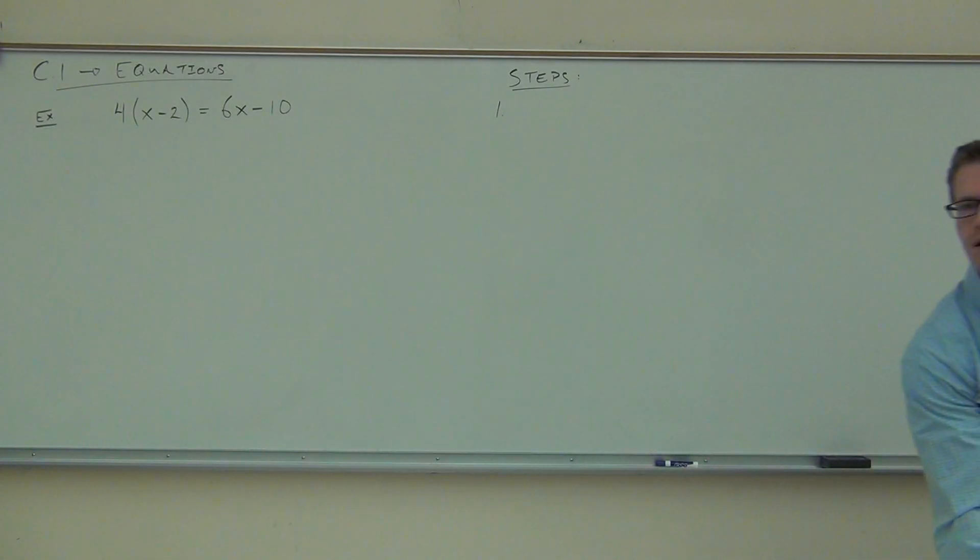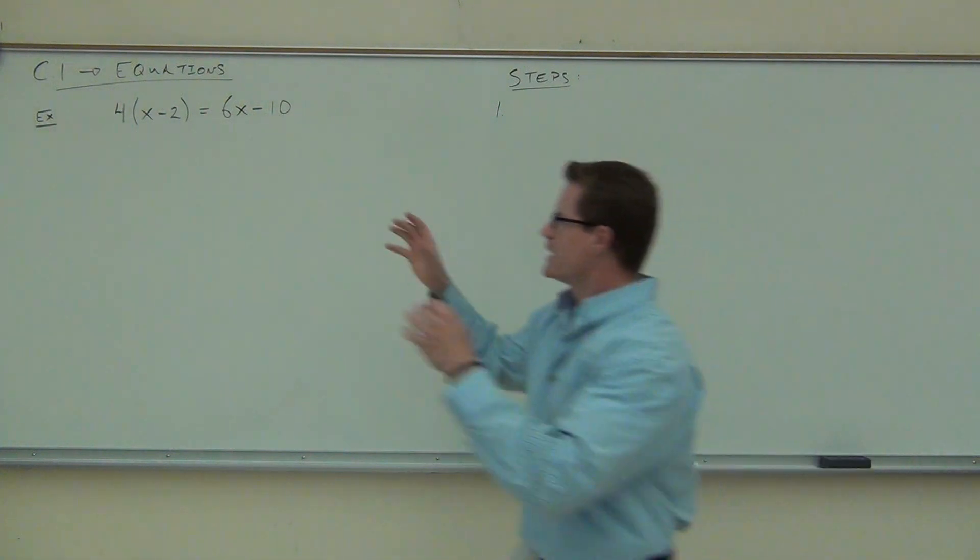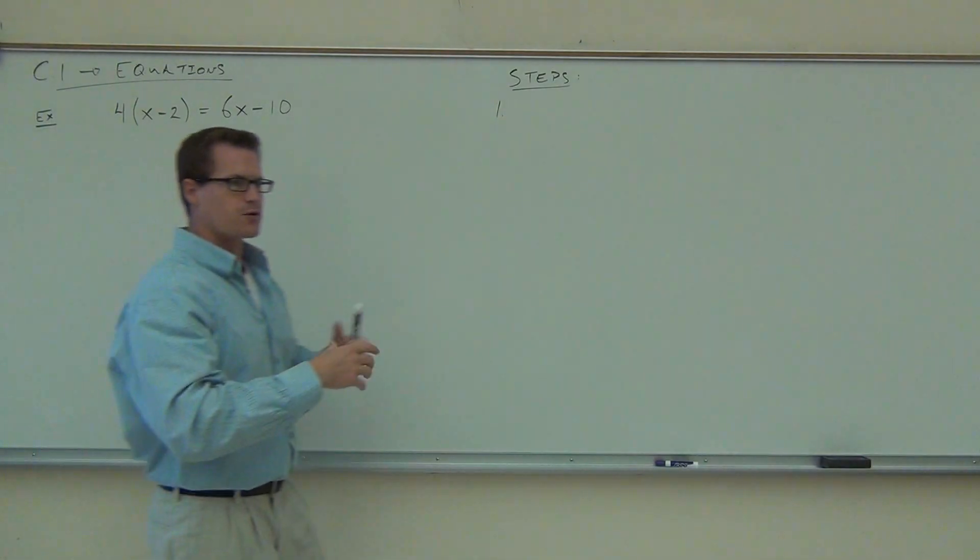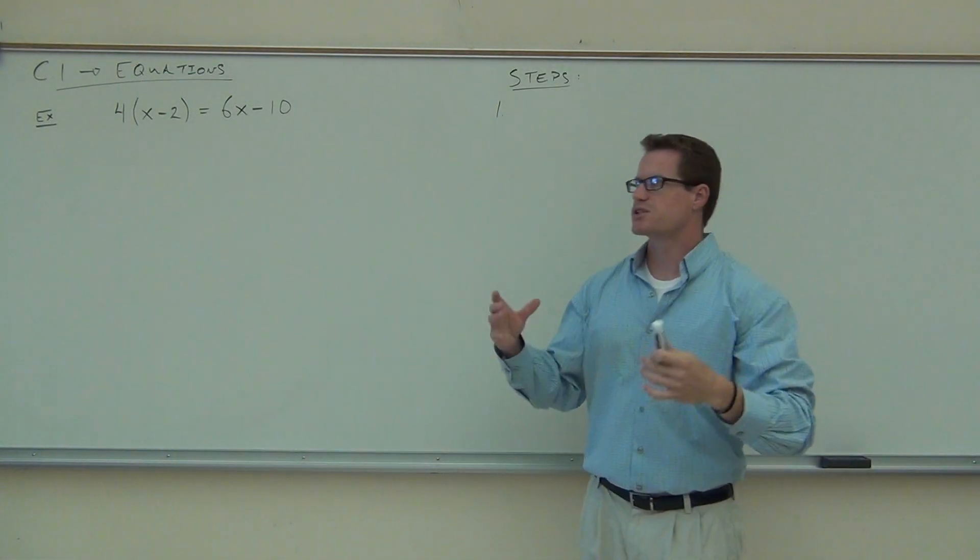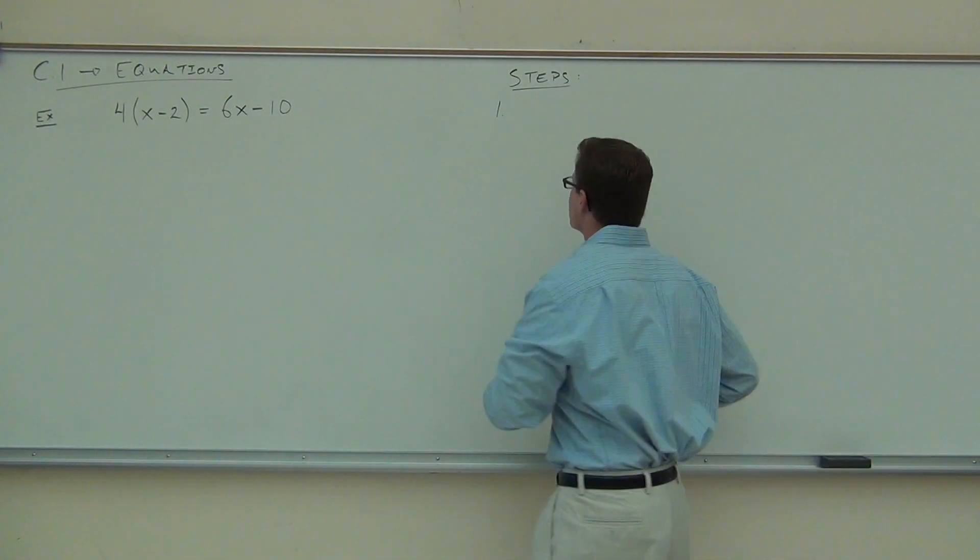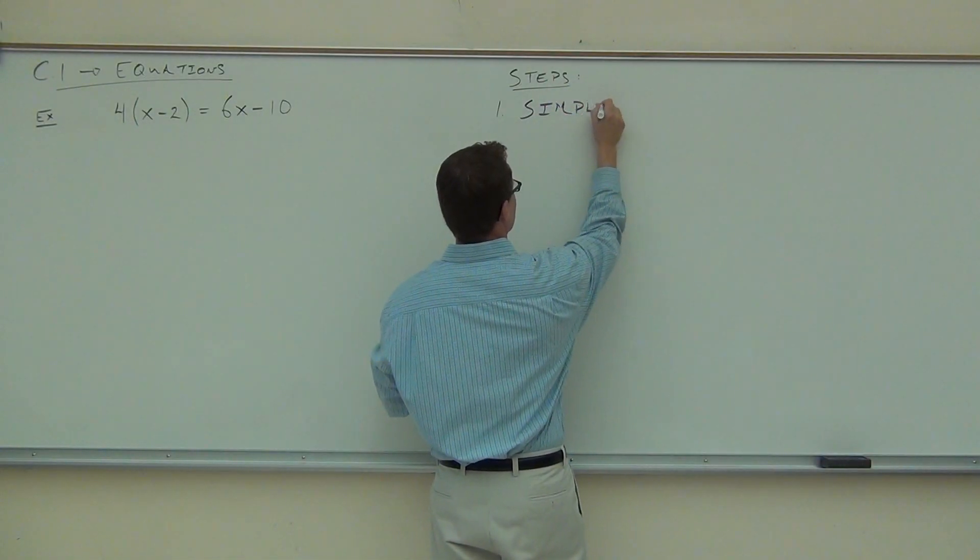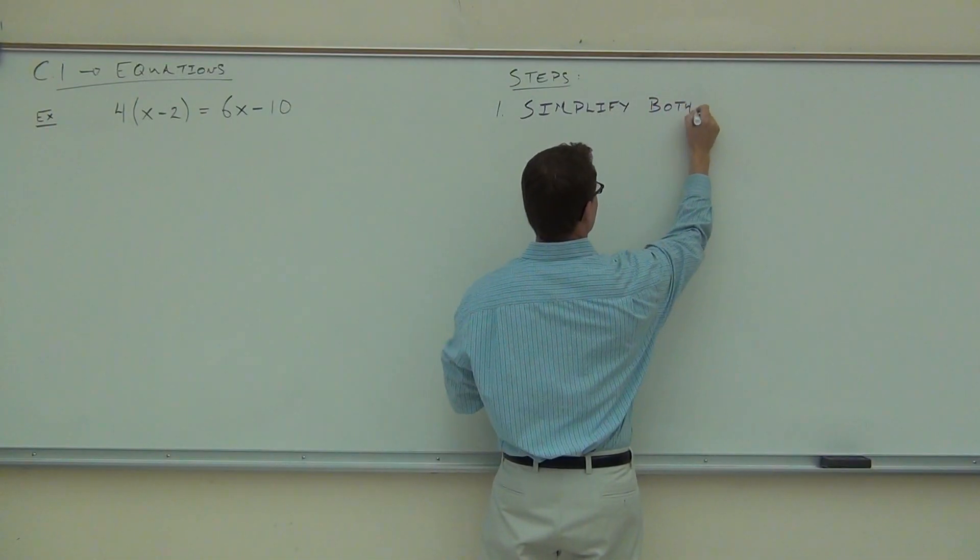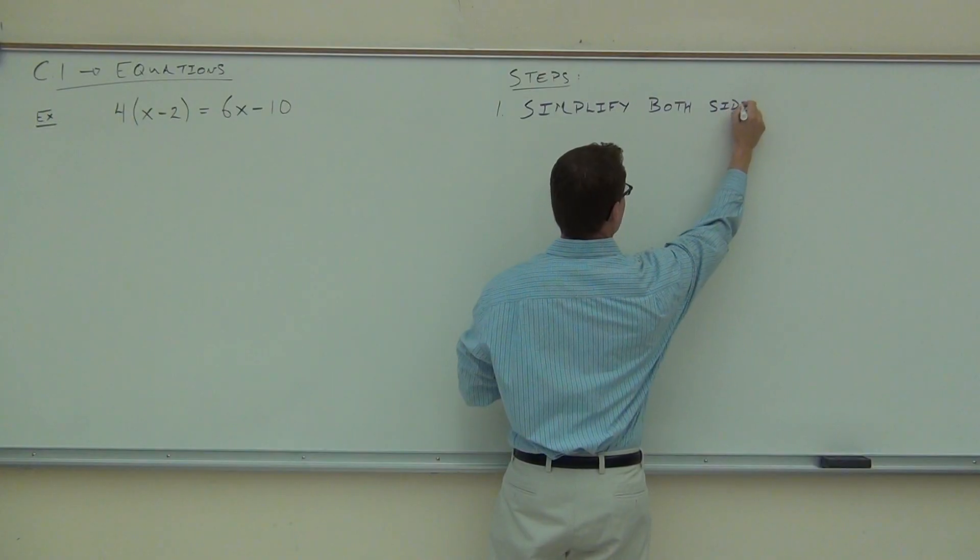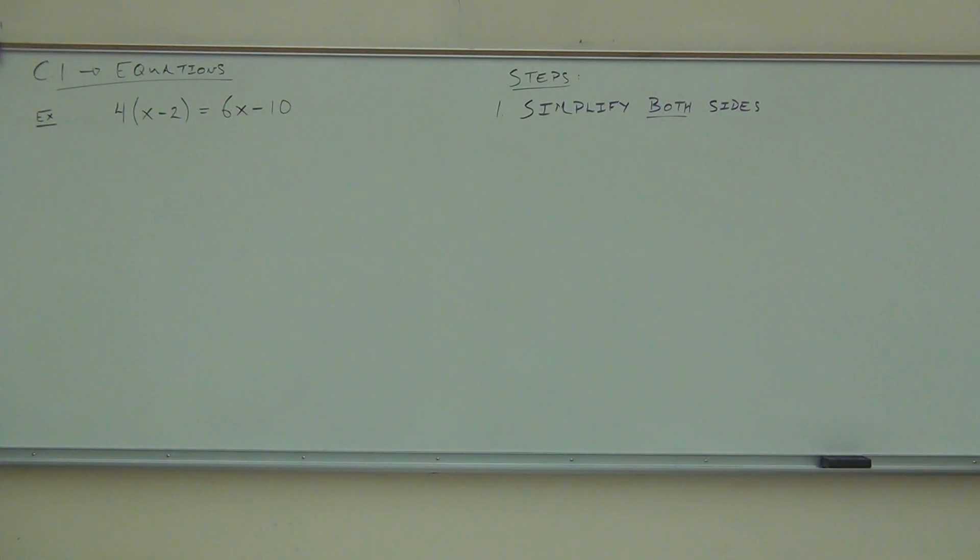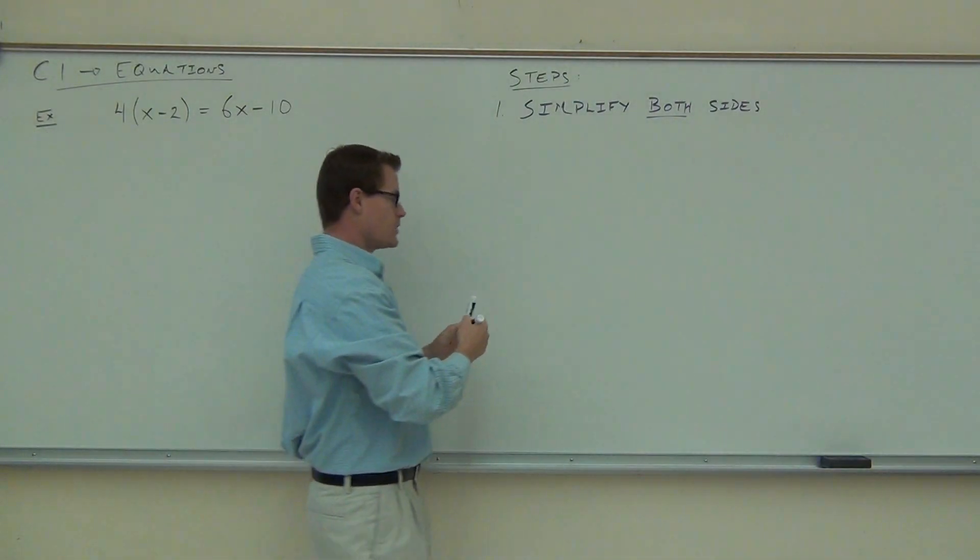By a show of hands, how many people feel they can solve this problem right now? Cool. If you raised your hand, what would you say would be your first step? Distributing. Good. So why? Can we do anything with this problem the way it is right now without distributing first? Okay, so let's go ahead and do that. Our first step to any equation is we're going to look at both sides of our equation and we're going to simplify both sides.